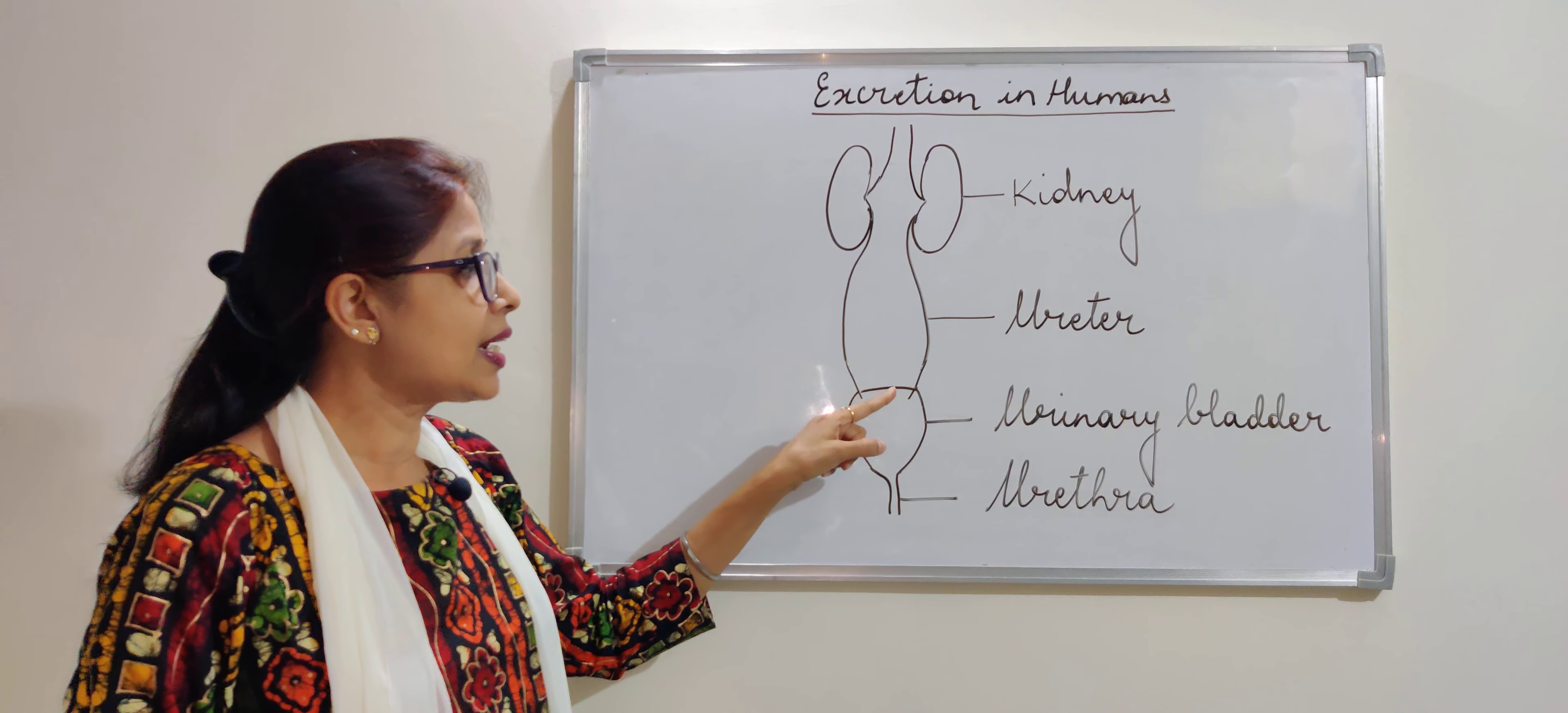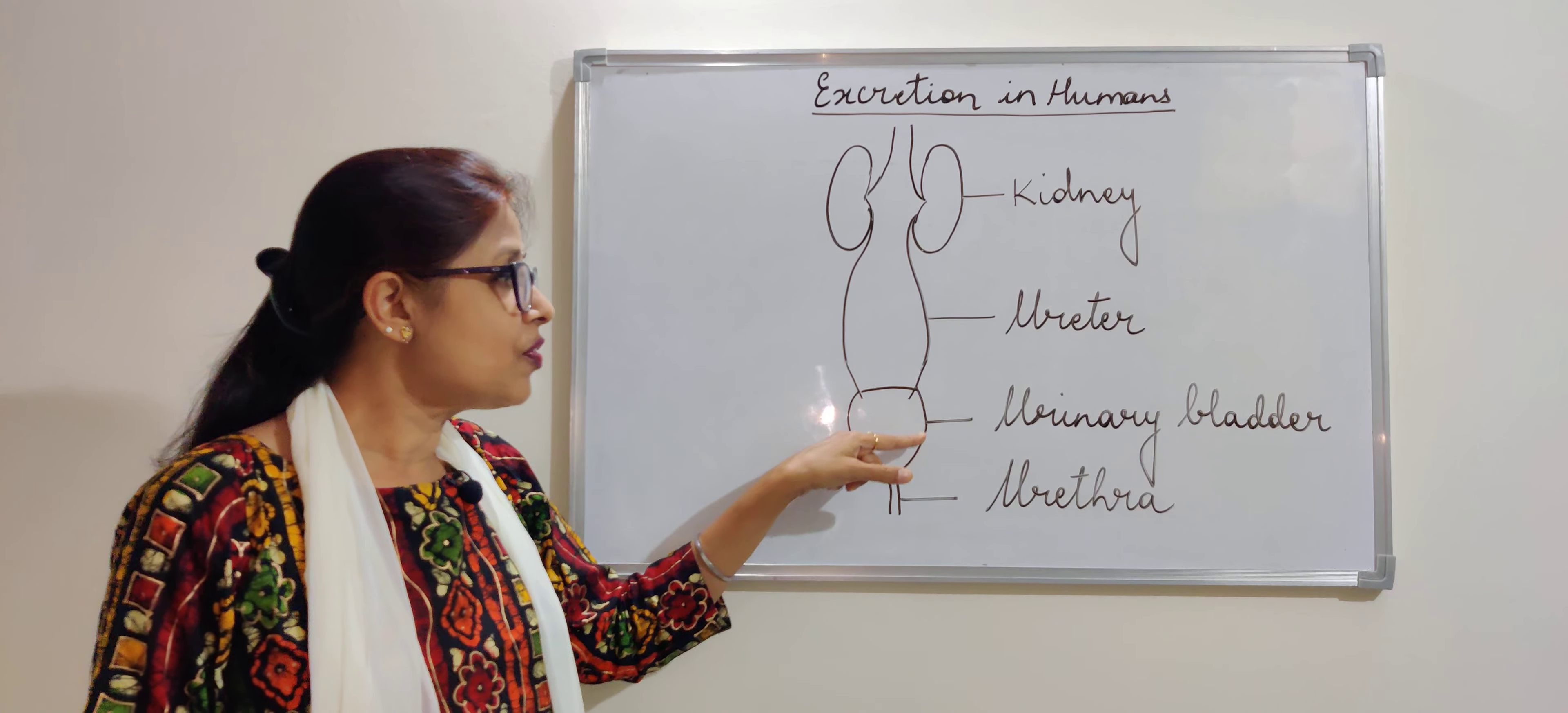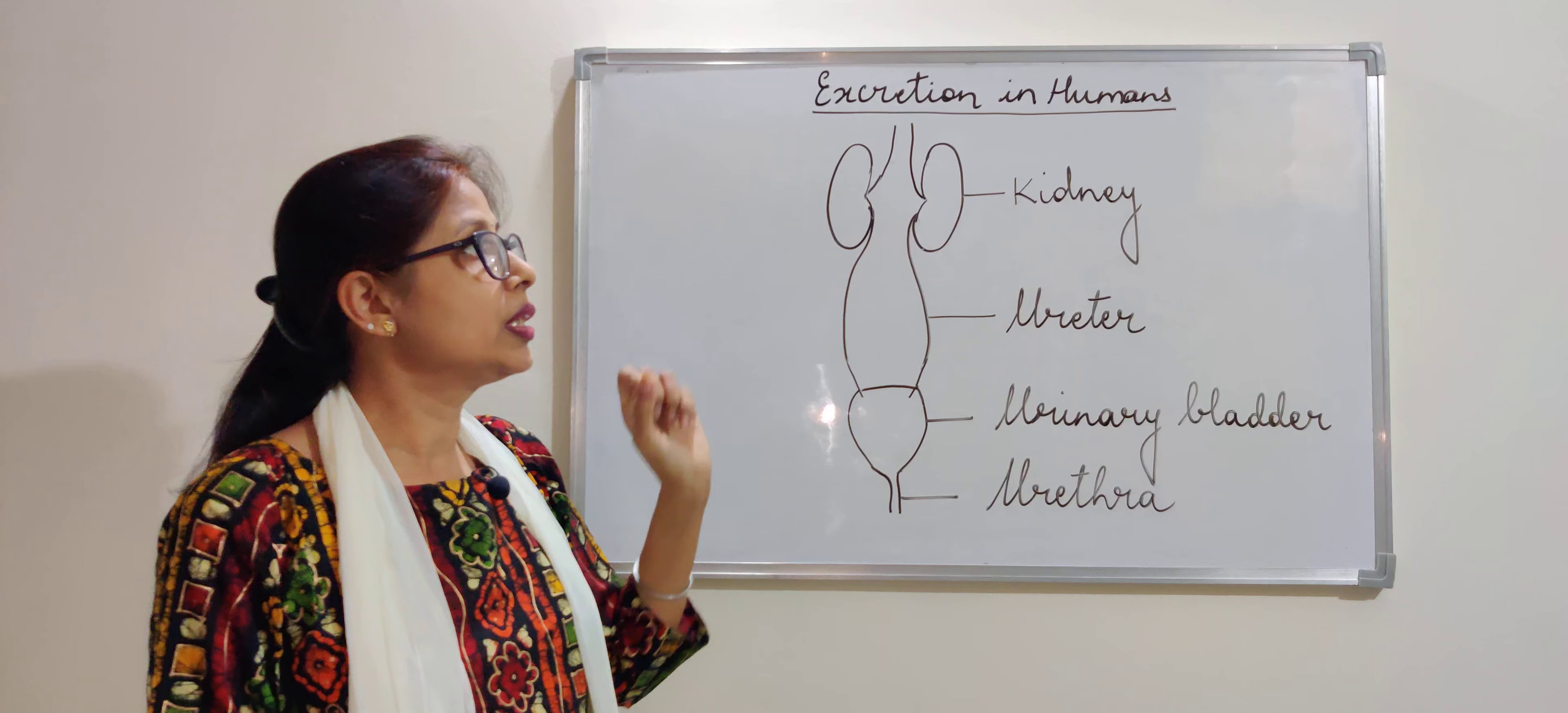It's a pipe. And then they come to a bag-like structure where they accumulate all the waste which is called the urinary bladder. At the same time, whatever is there in the urinary bladder, it is thrown out of the body by the urethra, the organ urethra. Now this is the basic. Let us understand the whole thing.